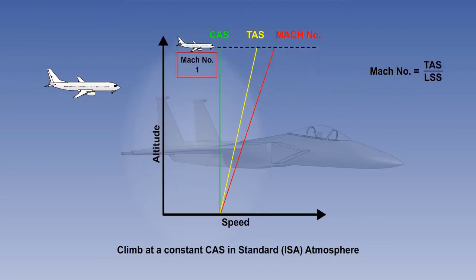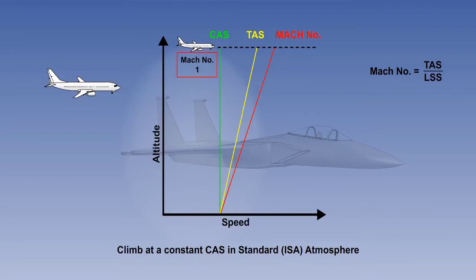So, if an aircraft was to be flown throughout the climb at a constant CAS, it would be quite possible that the aircraft could exceed Mach number limits as altitude is gained. High-performance aircraft are flown at a constant CAS, or indicated airspeed, for the first part of the climb, and the remainder of the climb is flown at a constant Mach number.